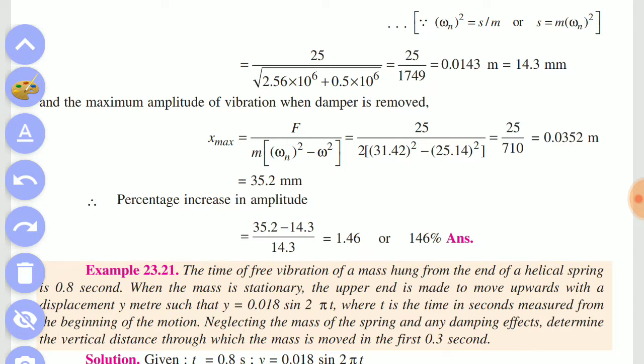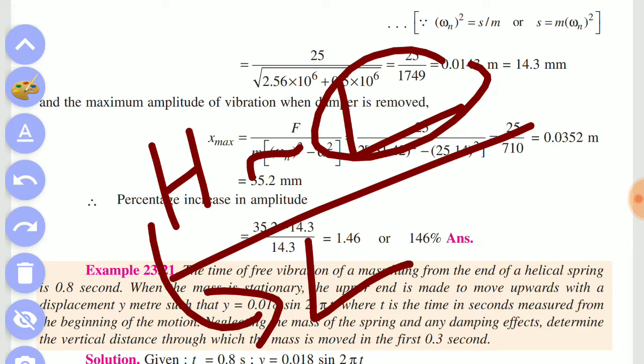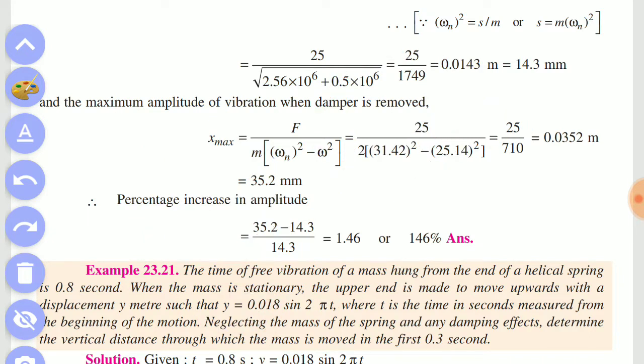So percentage increase in amplitude. First, increase or decrease. I'll tell you a shortcut. For percentage increase in amplitude, first there are two values, value 1 and value 2. Look at the difference. There is a higher value and a lower value. If you want increase in amplitude, look at the higher value and lower value. Divide by the lower value for increase, and by the higher value for decrease.